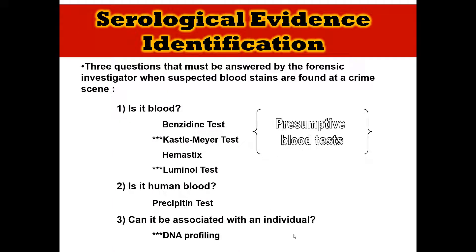There are three different questions that have to be answered by a forensic investigator when they're working a crime scene and they've found something that they believe could be blood. The first question a crime scene investigator is going to ask is: is this actually blood? They're not going to have time to swab that sample and send it off and wait days or weeks for results to come back. So an investigator will have a ready-to-go on-the-scene test — these are called presumptive blood tests. You can see different versions of these tests on the screen.